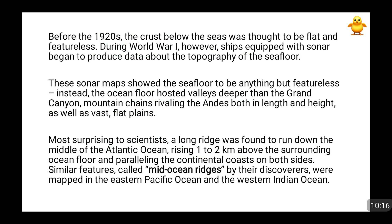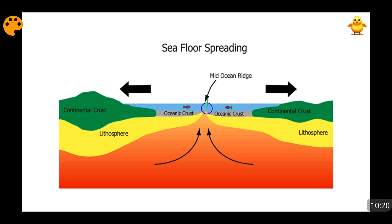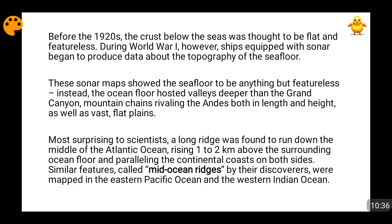The mid-oceanic ridge at the point of emergence of lava was 1 to 2 km above the surrounding nearby ocean basin. This mid-oceanic ridge is parallel to the shape of the continents. For example, the mid-Atlantic ridge runs between Africa and South America, and the South American and African coastlines exactly match with each other — as Wegener had also told. Similar types of mid-oceanic ridges were found in the Indian Ocean and Pacific Ocean as well.